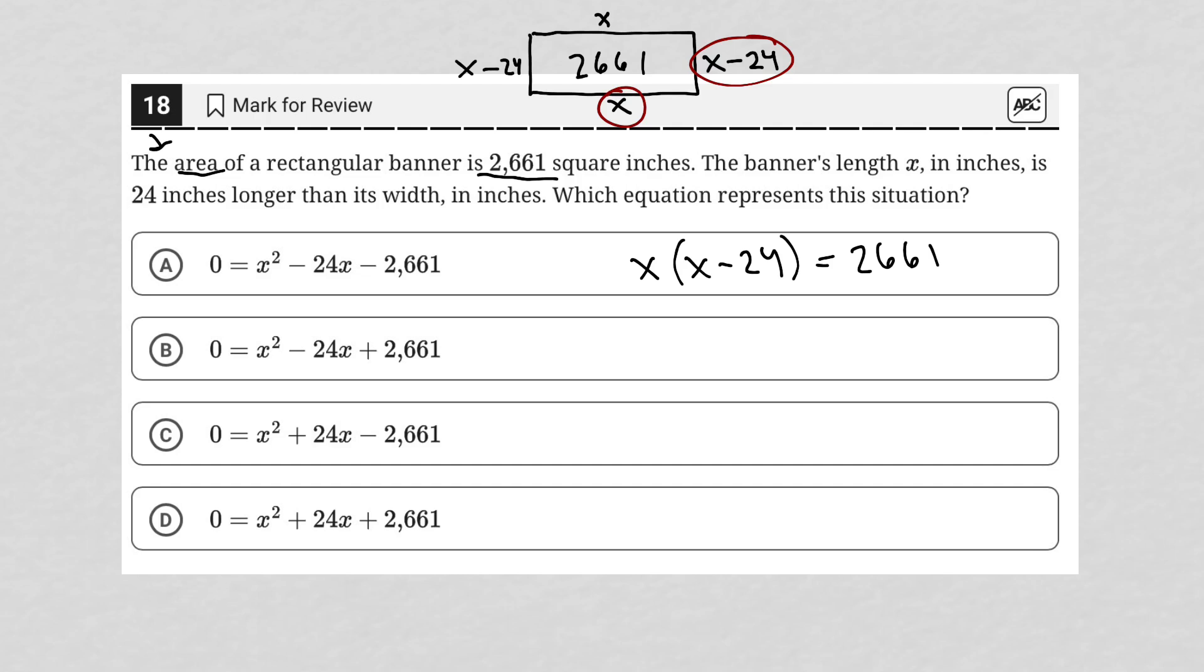I don't see that as an option in my answer choices, which means I need to simplify this a bit further. So I'm going to distribute this x across the parentheses there and have x squared minus 24x equals 2661.